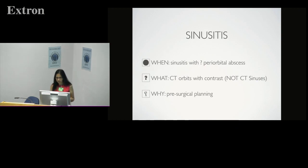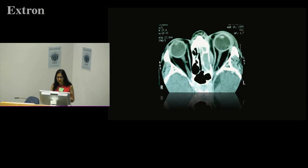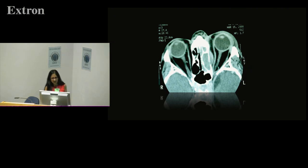When a patient presents with a complication of sinusitis and there are concerns of a periorbital abscess, CT scan with contrast is required for surgical planning. You're looking for whether there is an abscess, whether it is periorbital, and how to approach it. Here is the periorbital abscess alongside sinusitis in the ethmoid sinuses, and this will help you surgically plan for the patient.